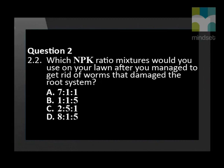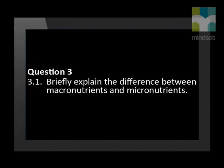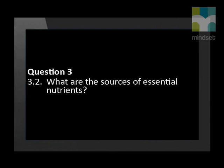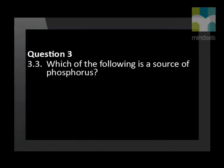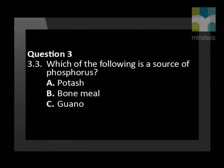Question 3. Briefly explain the difference between macronutrients and micronutrients. What are the sources of essential nutrients? Which of the following is a source of phosphorus: potash, bone meal, guano, or the atmosphere?